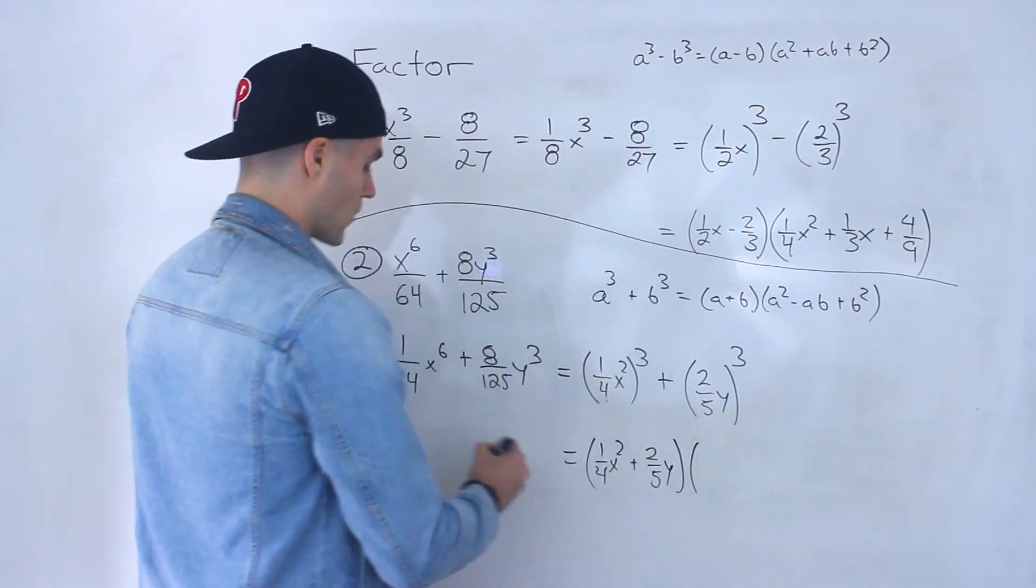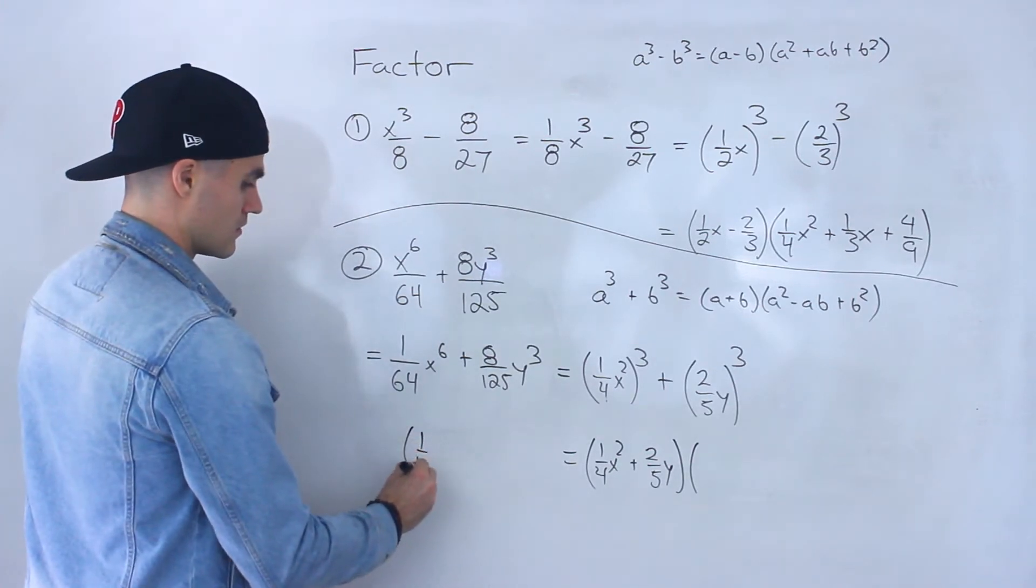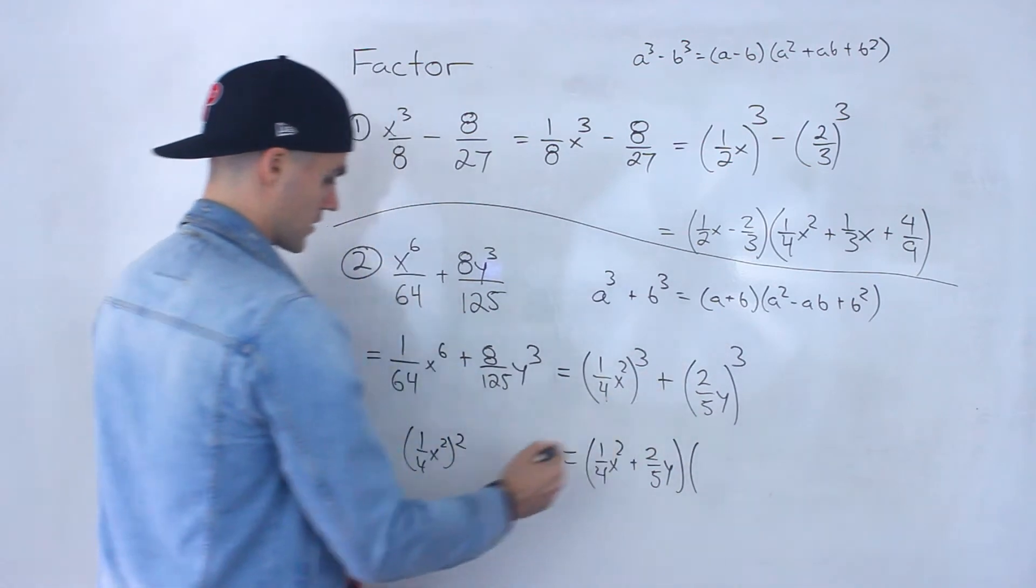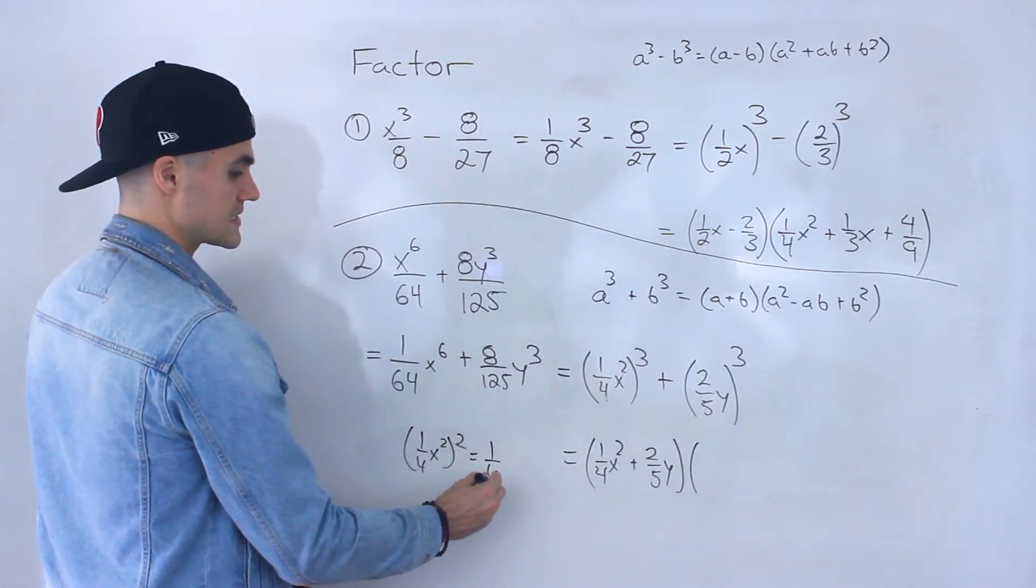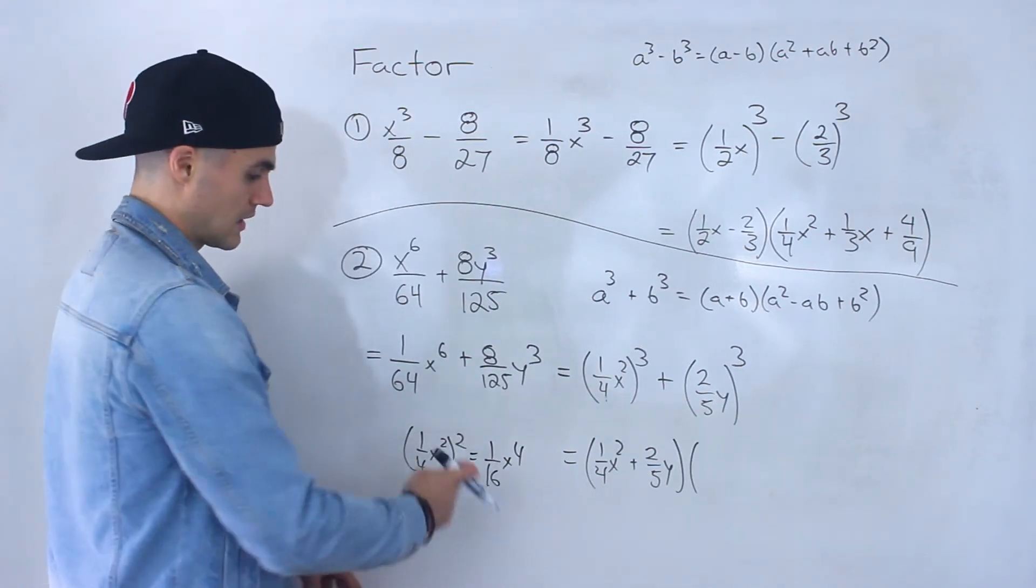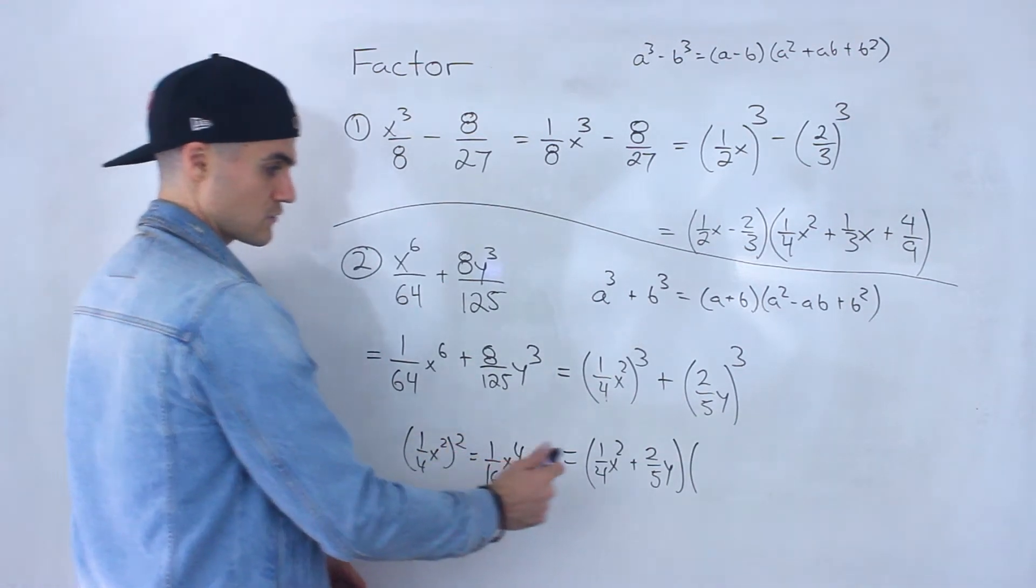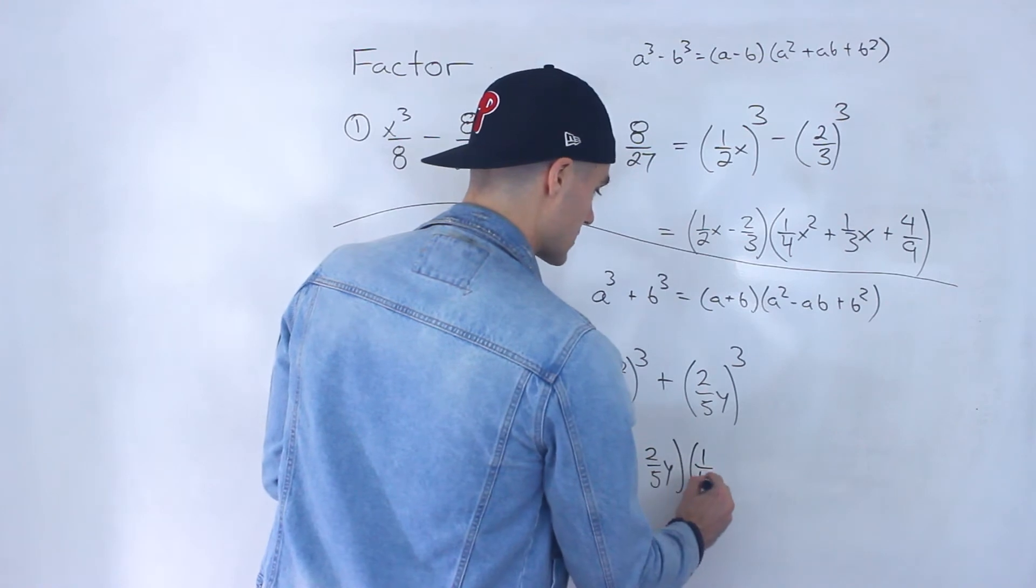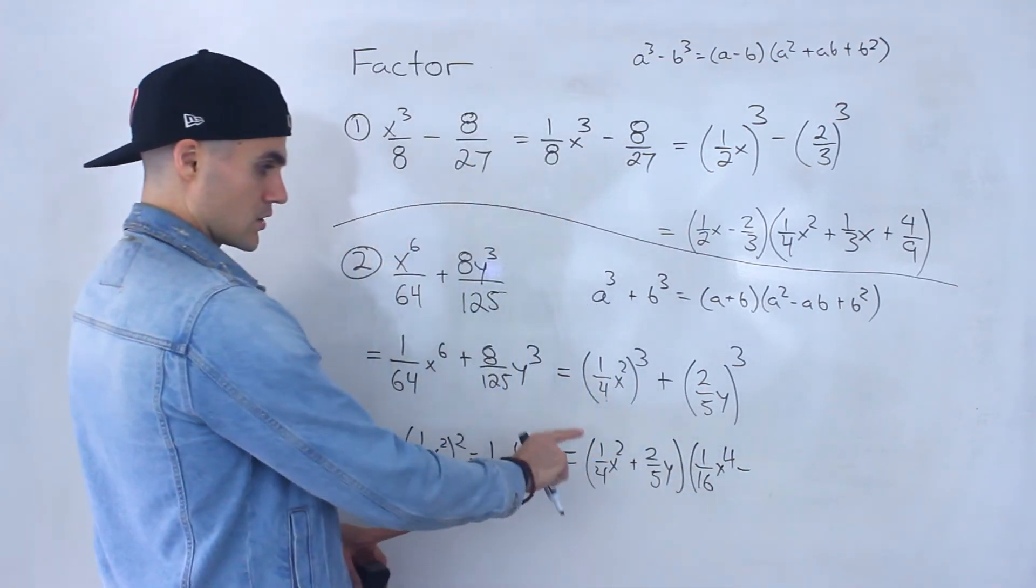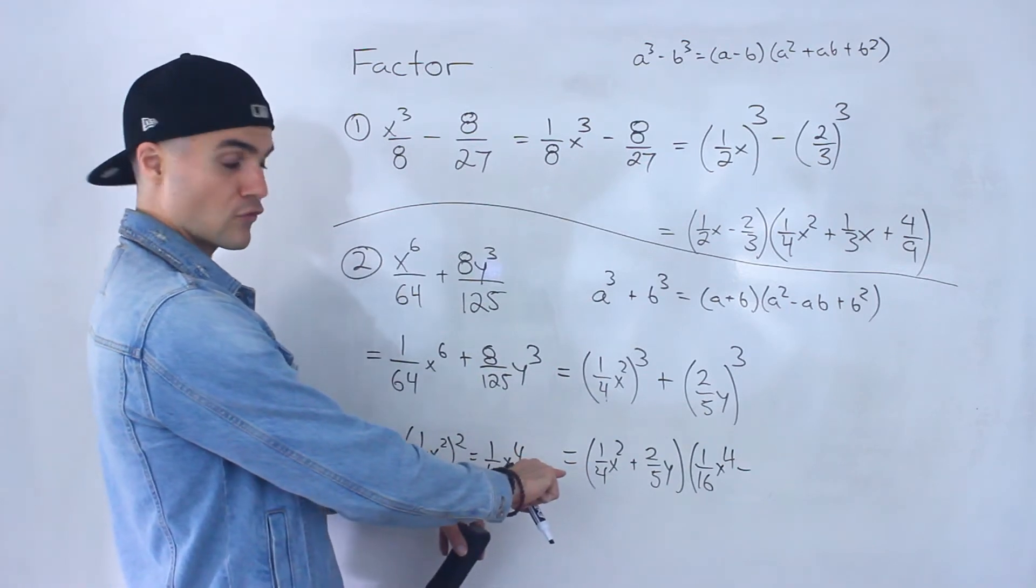1 over 4x squared to the power of 2, this part right here, this would be like, well, 1 over 16x to the 4. Right? 1 to the power of 2 is 1. 4 to the power of 2 is 16. x squared to the power of 2 is x to the 4. So this would be 1 over 16x to the 4 minus 2 over 5y times 1 over 4x squared.